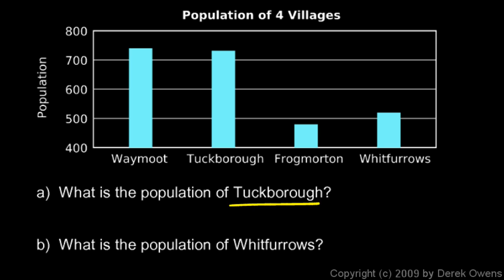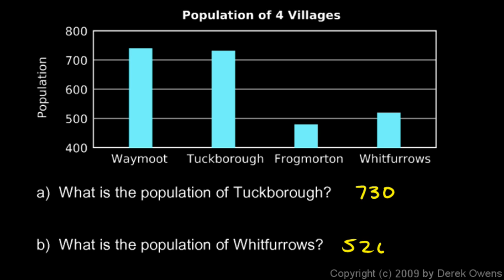We're asked: what is the population of Tuckborough? Finding it on the graph, it's over 700 and less than 800, and it looks like less than 750 but not a whole lot less — I'd estimate about 730. For Whitfurrows, it's a little over 500, maybe around 520. The key point is that you sometimes have to estimate when reading a bar graph, so pay close attention to the scale.